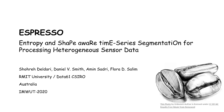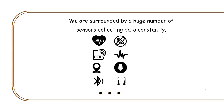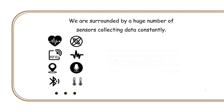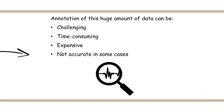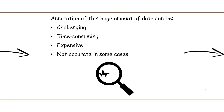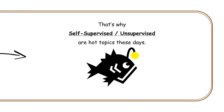Entropy and Shape Aware Time Series Segmentation. We are surrounded by a huge number of sensors collecting data constantly. Annotation of this huge amount of data can be a challenging, time-consuming, and expensive task, and it's even not accurate in some cases. That's why self-supervised and unsupervised methods are hot topic these days.